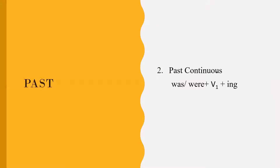Past continuous. Formation: 'was' or 'were' plus first form of verb plus '-ing'. Here 'was' is used for singular subjects and 'were' is used for plural subjects.